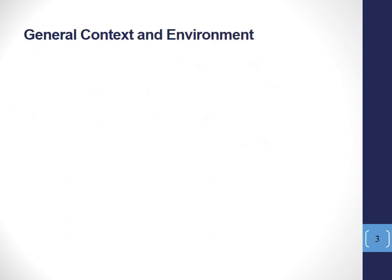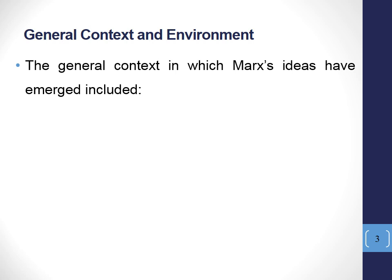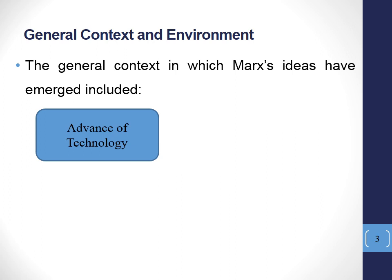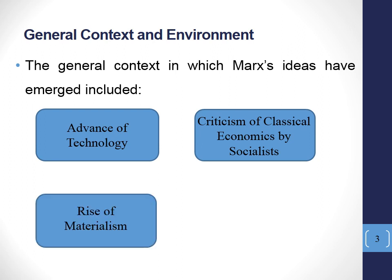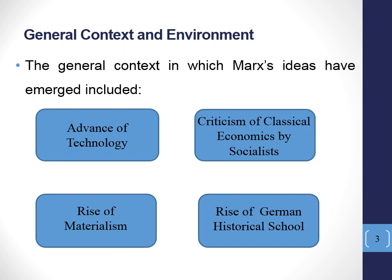If we talk about the general context and the environment at the time of the evolution of the ideas of Karl Marx, we have some factors that shaped the general context and environment at that time — now we are talking about the mid 19th century. At that time, we have more advances in technology, the criticism of classical economics by socialists, mainly the French socialists, the rise of materialism and how man shapes history, and the rise of the German historical school and the importance of history in explaining economic ideas and the evolution of these ideas.